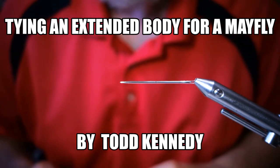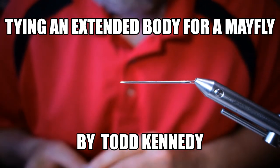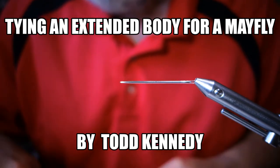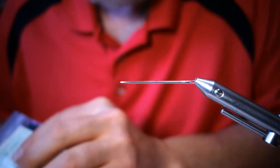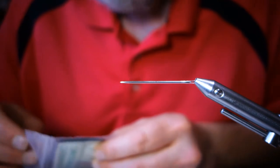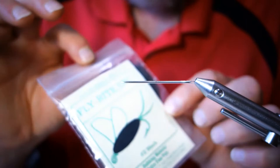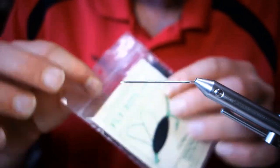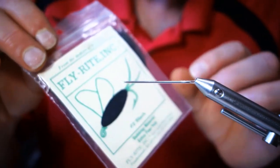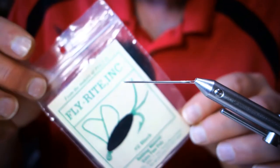Today I'm going to show you how to tie an extended body for a mayfly. For this you'll need polydubbing or a very fine dubbing that has long fibers. I used Fly-Rite polydubbing for this example, and this is what I was using when I started tying this back in the early 90s.